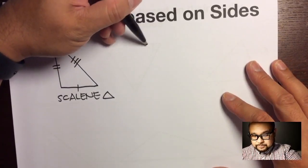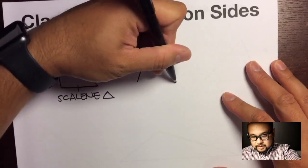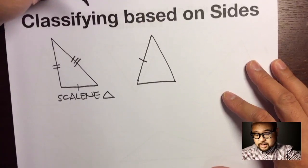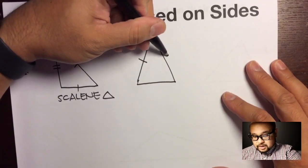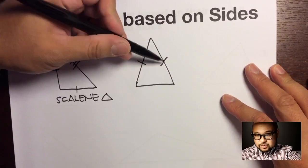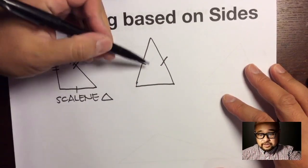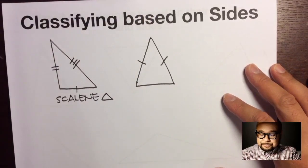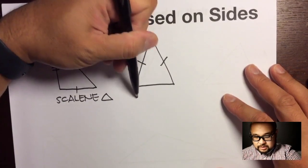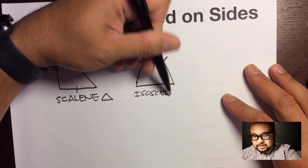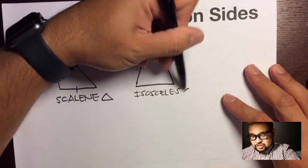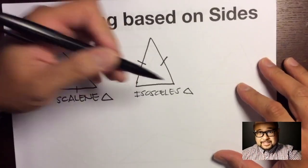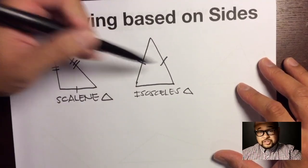The next type is when two sides are congruent. If I put one tick mark on this side and one tick mark on this side, that means these two sides are congruent to each other — for example, both could be five, while the third side could be any other number. This type of triangle is called an isosceles triangle: two sides are congruent, and one side is isolated from the other two.